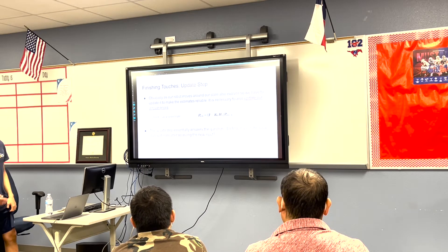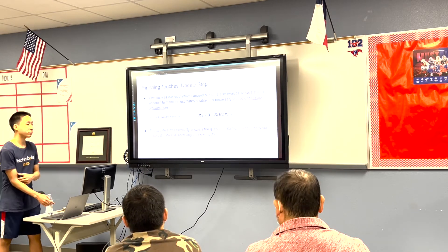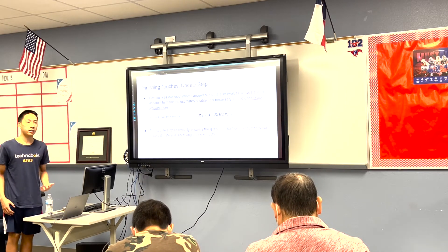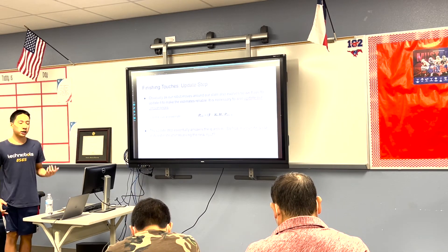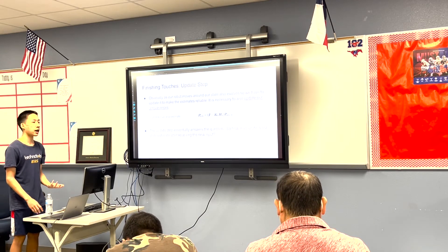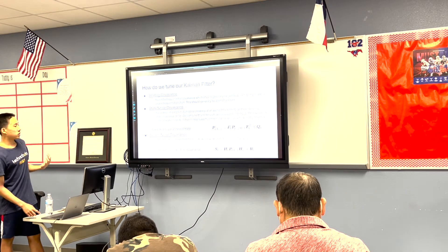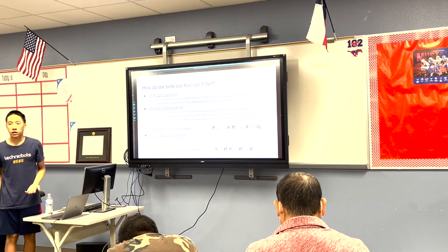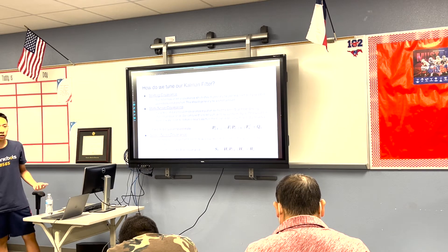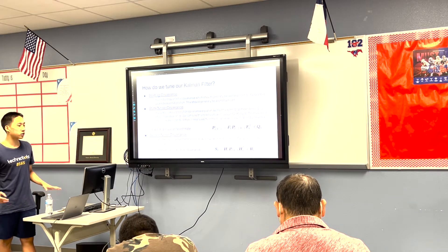After we've done all this, we need to update how uncertain the estimates are. For example, if we find that our robot's encoders are very inaccurate, we need to update that instead of having wrong data. We can tune our Kalman filter because our robots are all different — they have different weights and weight distributions.